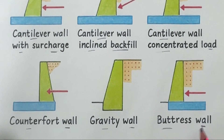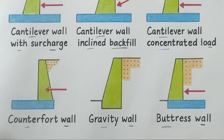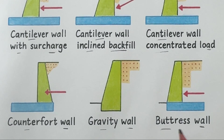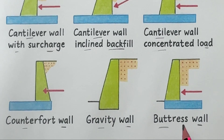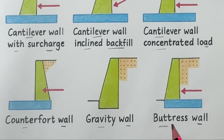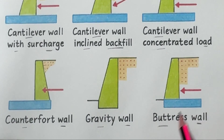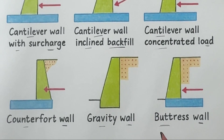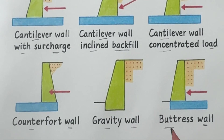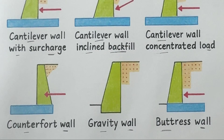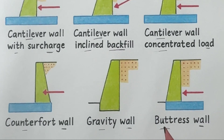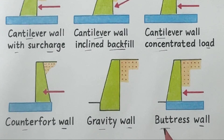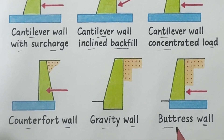Number nine: buttress wall. This is similar to a counterfort wall, but the supporting ribs are placed on the front side instead of the back. The buttresses push back against the soil pressure, making the wall stronger. They are usually used when there's space available in front of the wall and we want to reduce the bending in the main stem.